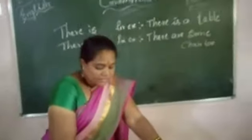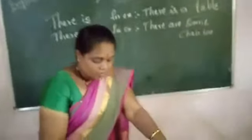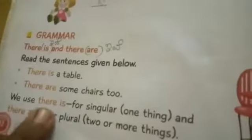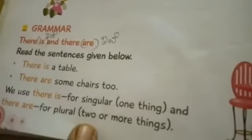I am taking grammar now. First, see phrase number 42. They have given a grammar topic: 'There is' and 'There are'. Read the sentences given below: 'There is a table. There are some chairs too.' We use 'there is' for singular — one thing — and 'there are' for plurals, two or more things.